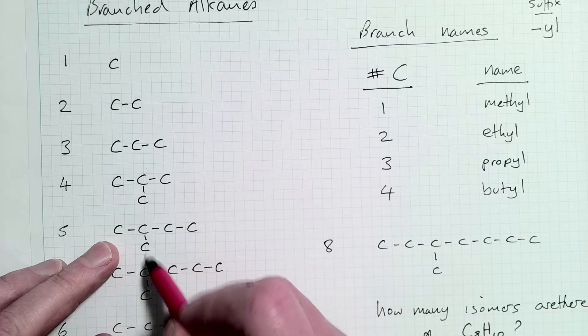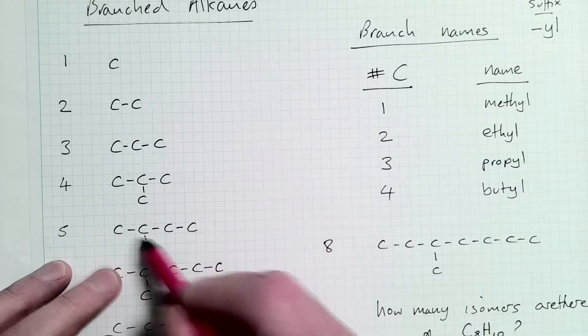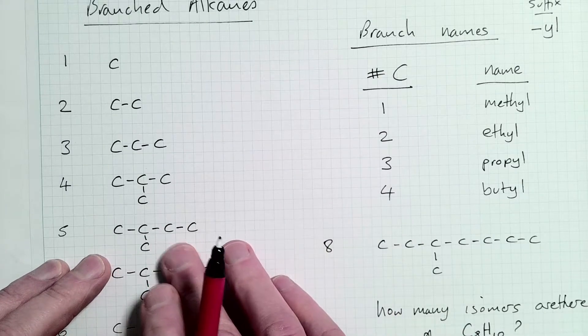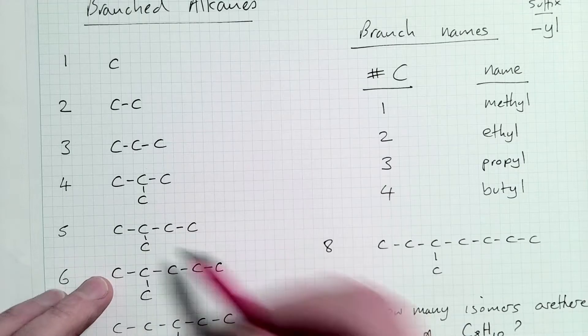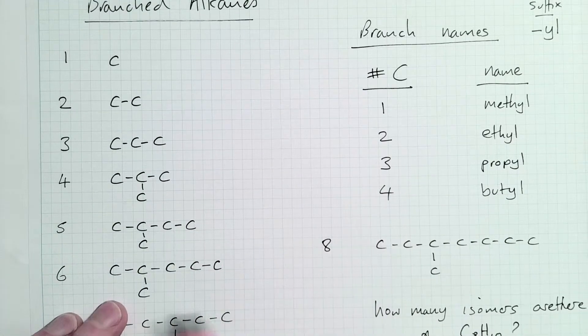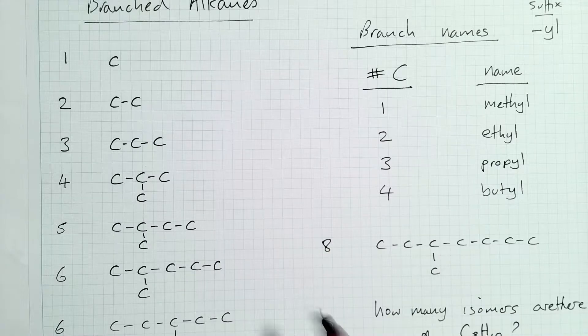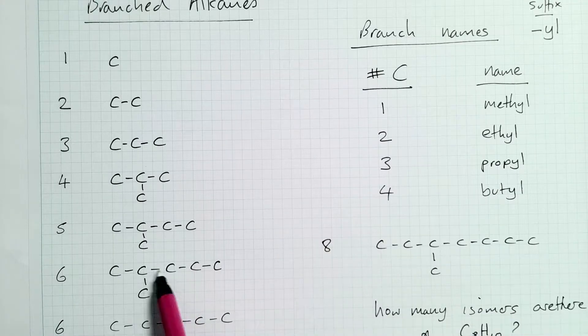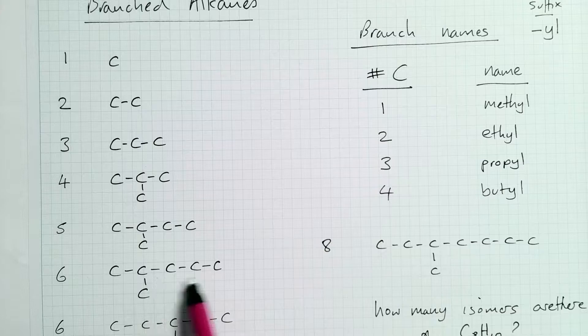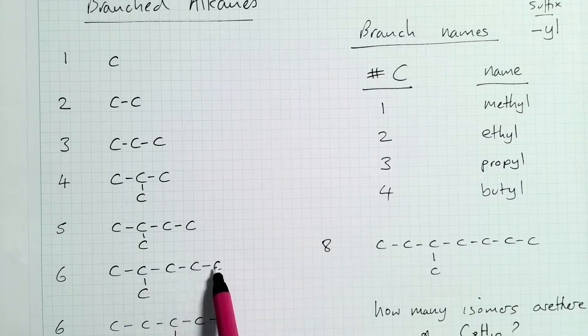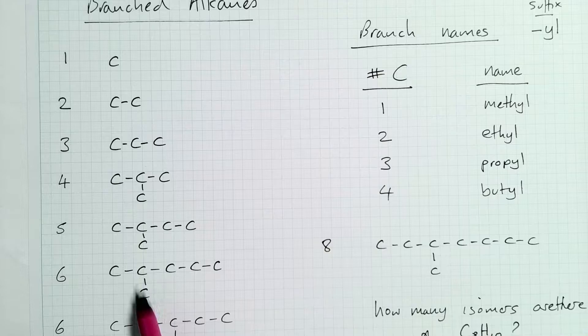Now you could say, what happens if we put an extra carbon on there? Well, we have to take one off here, and we end up with pretty much the same structure. So that's pretty much the only form you can get with a five-carbon branched alkanes. Six-carbon branched alkanes, on the other hand, are slightly different.